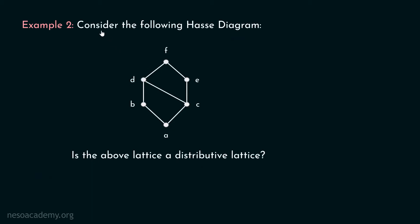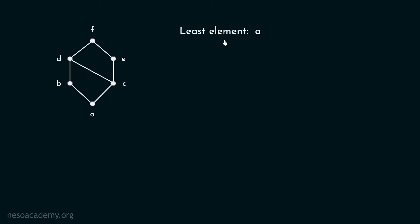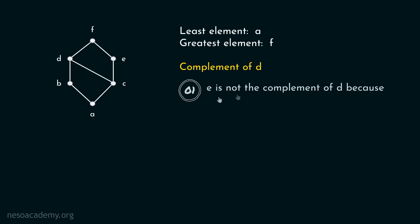Now we will consider one more example. Consider the following Hasse diagram — is this lattice a distributive lattice? We will use definition two. The least element in this lattice is A and the greatest element is F. Let's find the complements of D. Is E a complement of D? The least upper bound of E and D is F — that is true. But the greatest lower bound of E and D is C, not A. Hence E is not the complement of D.